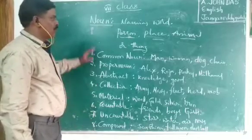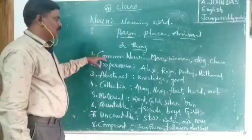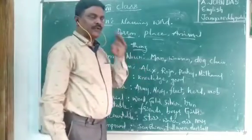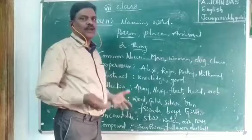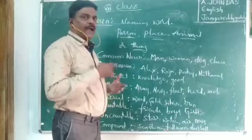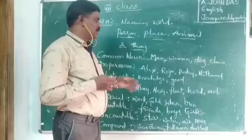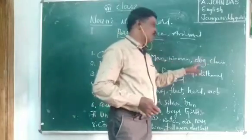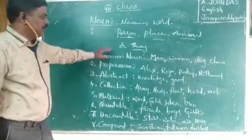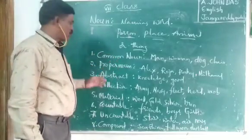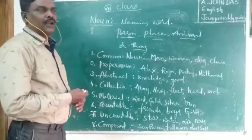Common noun is a word which is used for common things. For example, we are all human beings — man, woman, dog, chair, etc. Every man, woman, or animal that exists commonly in society is referred to by a common noun.